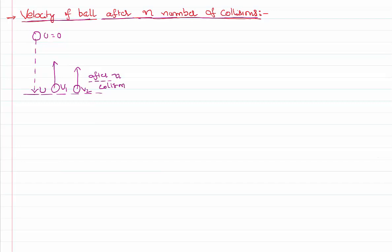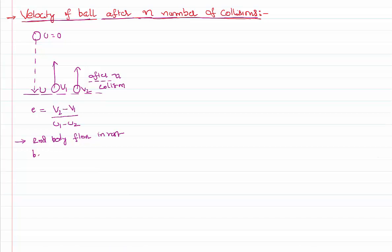So this obviously depends on the coefficient of restitution. As we have explained in the previous video lessons, coefficient of restitution is defined as the ratio of relative velocity of separation after the collision to the relative velocity of approach before the collision. In this case, the second body is the solid floor.